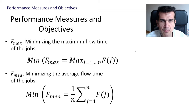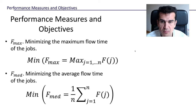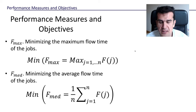Another common objective is to minimize the maximum flow time of the jobs. Remember, the flow time of a job is how long this job stays at the workshop. In static problems where all jobs are available at time zero, the flow time and the completion time are equivalent — they are the same. But in general, in dynamic problems they may not be, so we may be interested in minimizing the maximum flow time F_max.